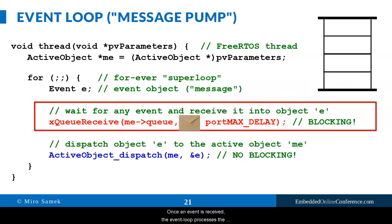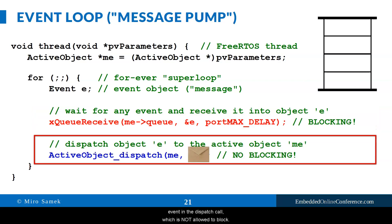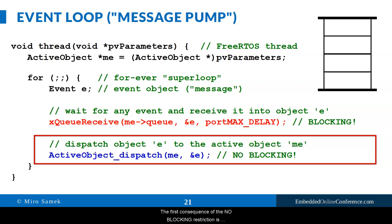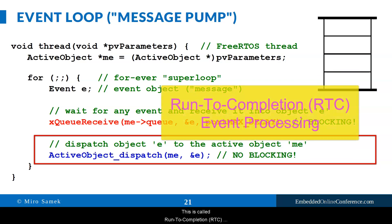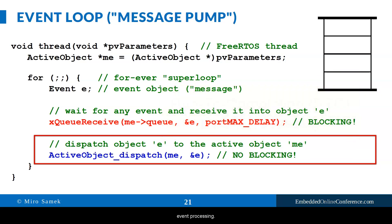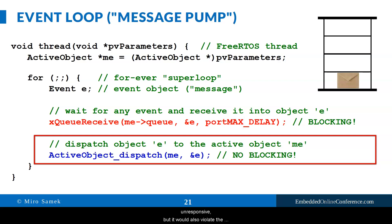Once an event is received, the event loop processes the event in the dispatch call, which is not allowed to block. This is the most important restriction of the event loop, with the most far-reaching consequences. The first consequence of the no-blocking restriction is that dispatch must process one event at a time, to completion, and necessarily return back to the event loop in order to start processing the next event. This is called run-to-completion event processing. The second consequence is that dispatch cannot be coded sequentially with the usual wait-respond paradigm — this would not only clog the event loop and make it unresponsive, but it would also violate the run-to-completion event processing requirement.